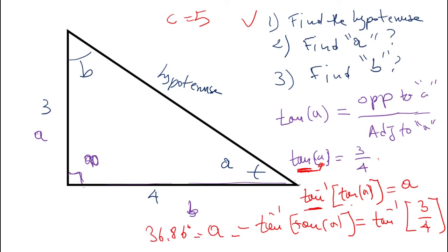So angle A is 36.86 degrees. To find angle B, we use the fact that angles in a triangle sum to 180 degrees. We have 90 + 36.86 = 126.86, so angle B = 180 − 126.86 = 53.13 degrees. You can also use sine, cosine, or tangent to find angle B.